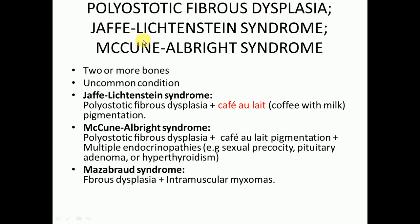Polyostotic fibrous dysplasia may be related to Jaffe-Lichtenstein syndrome and McCune-Albright syndrome. When two or more bones are involved, it is known as polyostotic fibrous dysplasia, which is an uncommon condition. In Jaffe-Lichtenstein syndrome, there will be polyostotic fibrous dysplasia along with café-au-lait pigmentation.